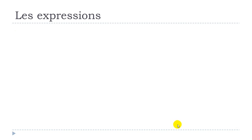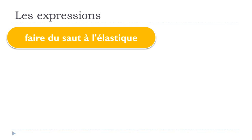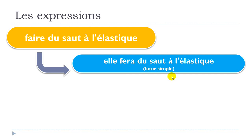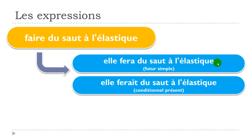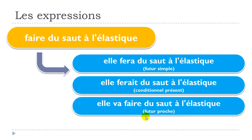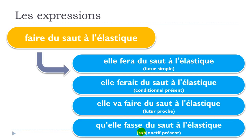Let's see how to conjugate this expression. At the future simple form: 'elle fera du saut à l'élastique.' Conditionnel présent: 'elle ferait du saut à l'élastique.' Futur proche: 'elle va faire du saut à l'élastique.' Subjonctif présent: 'qu'elle fasse du saut à l'élastique.'